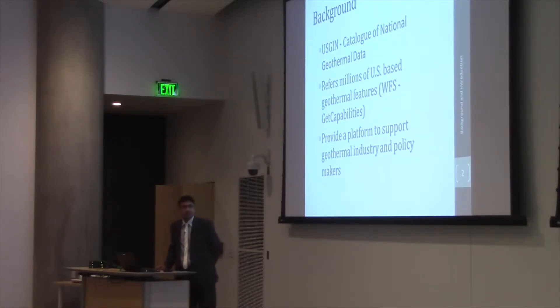USGIN is a massive catalog of geothermal data. It refers to basically millions of US-based geothermal features, which are metadata in the form of web feature services get capabilities URLs. The basic purpose to develop a USGIN repository was to provide a platform for the interested folks. It may include geothermal industry, policy makers, students, or web developers.